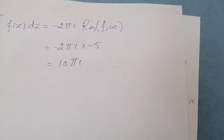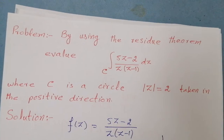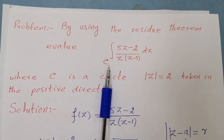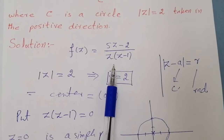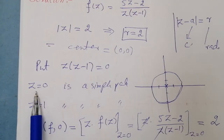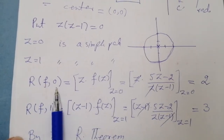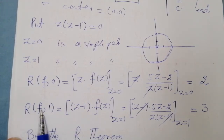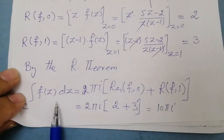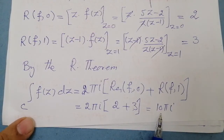Now let us verify using the classical residue theorem from the previous lecture. The singular points of f(z) = (5z − 2)/(z(z − 1)) are z = 0 and z = 1, both simple poles. The residue of f at 0 equals 2, and the residue of f at 1 equals 3. By the residue theorem, the integral equals 2πi times the sum of residues, giving 2πi·(2 + 3) = 10πi, which is the same answer.